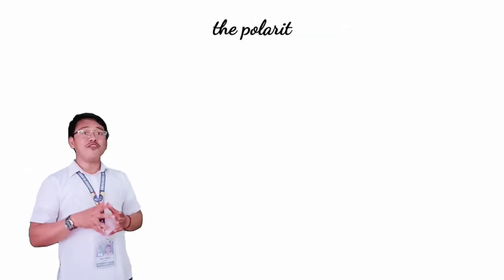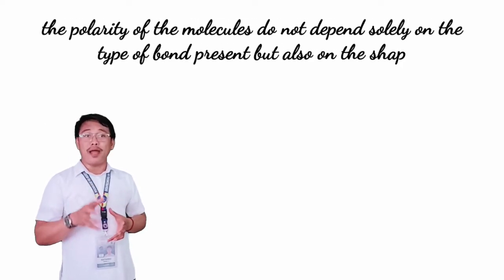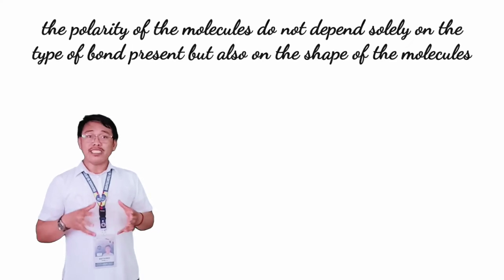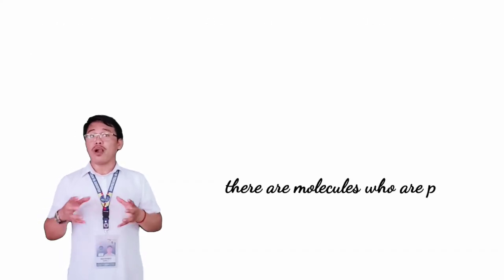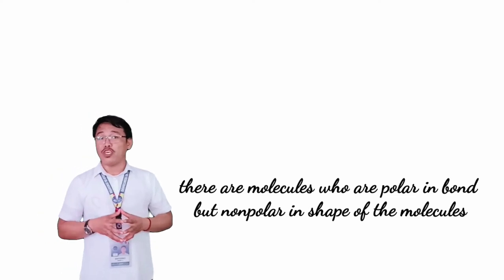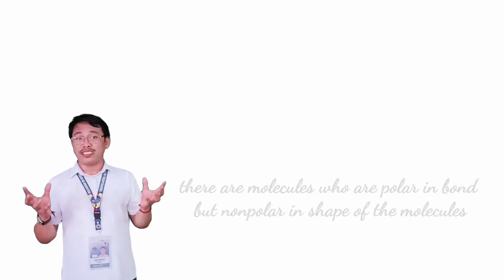That's simple. However, the polarity of molecules do not depend solely on the type of bond present but also on the shape of the molecules. This means that there are molecules who are polar in bonding but are actually non-polar molecules based on the shape of the molecules. Maybe you're now wondering how it happened.